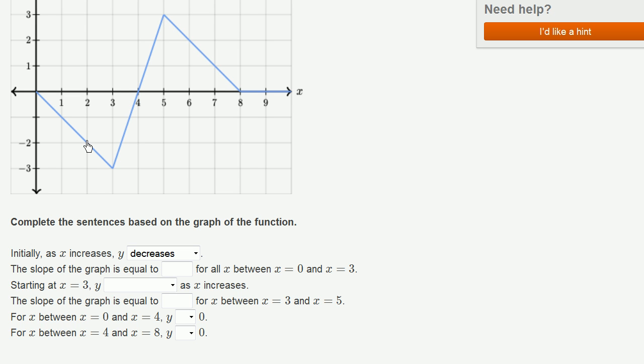So our change in y over our change in x - our change in y is negative 1 whenever our change in x is 1. So our change in y over our change in x, which is the definition of slope, is negative 1 over 1, or negative 1. And we see that. Every time x increases by 1, y decreases by 1.